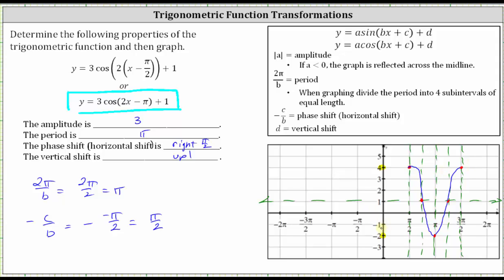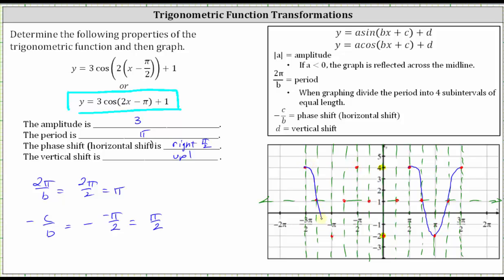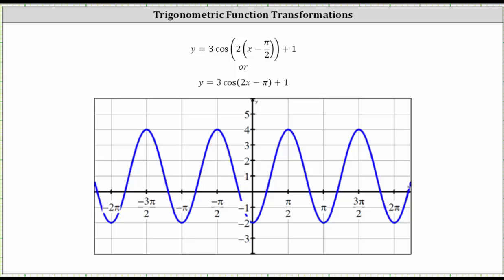We can copy and paste this period to the left and the right. Going back pi radians to x equals negative pi over two, divide that interval into four equal sub-intervals and follow the same pattern: max, midline, minimum, midline, maximum. Going back pi radians again to x equals negative three pi over two, divide into four equal sub-intervals and follow the same pattern: max, midline, minimum, midline, max. Let's sketch more of the graph. If we use software, we can see we get the same graph from both functions.